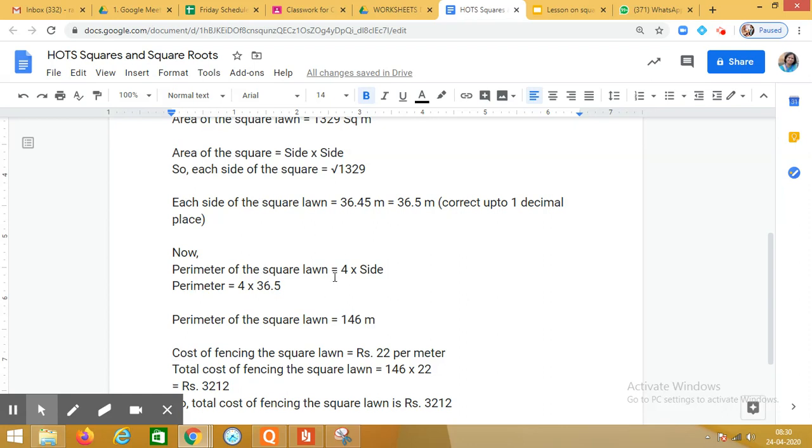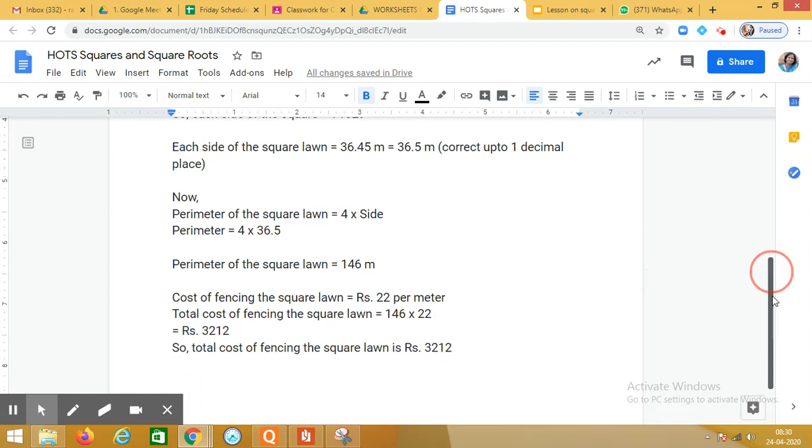Now tell me what is the formula for perimeter of the square lawn? Perimeter of the square is 4 into side. Very good. So 4 into 36.5 meters gives us 146 meters. So perimeter of the square lawn is 146 meters.